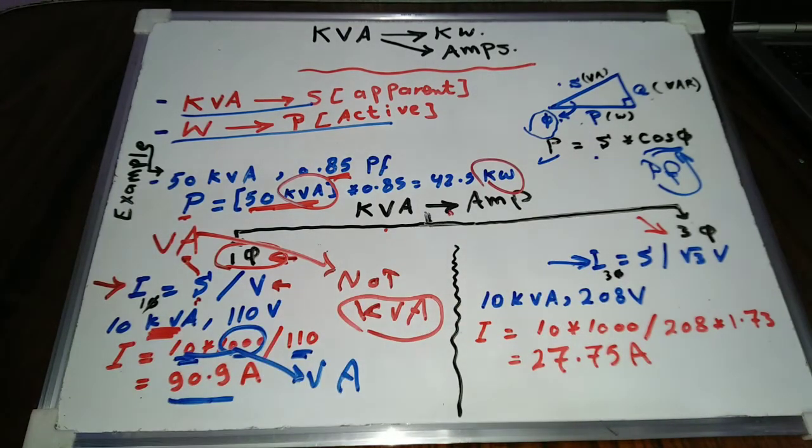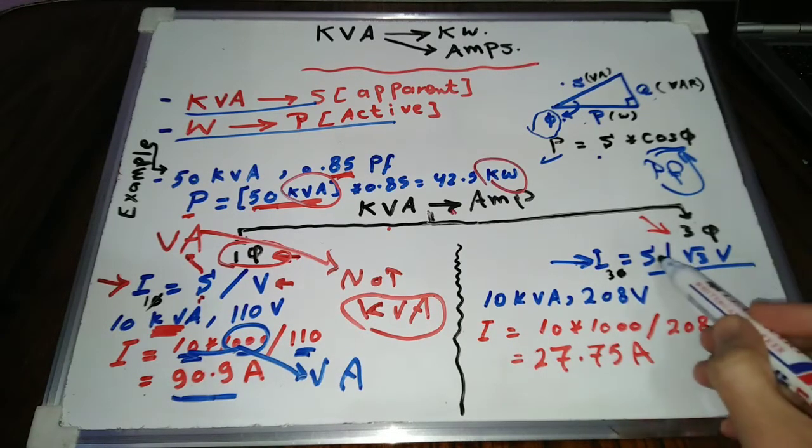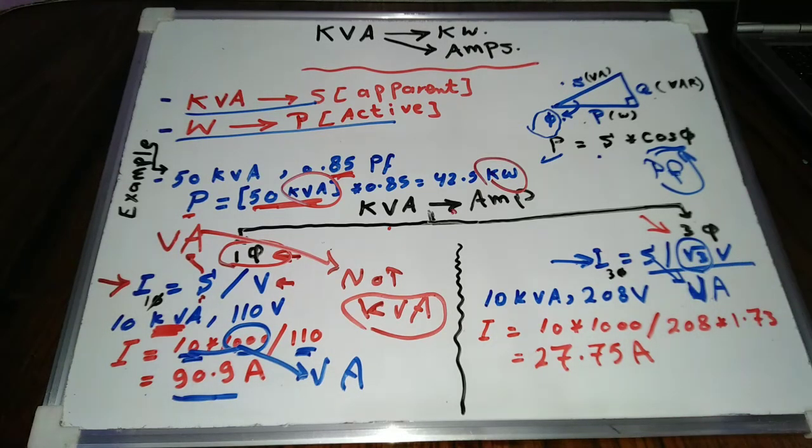Current I equals apparent power S in volt ampere, divided by voltage in volt multiplied by 1.73. It's clear that the two equations are similar except in case of three phase we multiply voltage by 1.73.